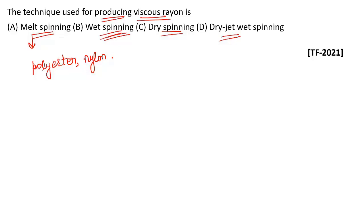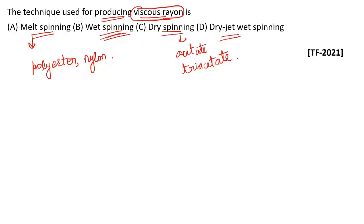Dry spinning is used for the production of acetate, triacetate, and some acrylic, modacrylic, or spandex fibers. Since our question asks about the technique for producing viscose rayon, viscose fiber is produced by the wet spinning process, so option B is the correct answer.